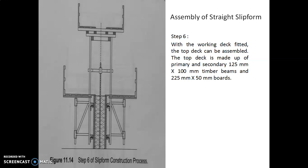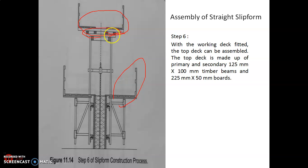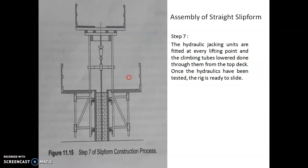In the sixth step, after fixing the working deck, you assemble the top deck. The top deck is made up of primary and secondary beams of 125 by 100 mm timber beams, supported on 225 by 50 mm boards. After fixing the working platform, you proceed to fix the top platform or top deck.